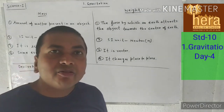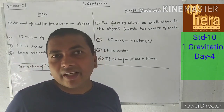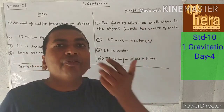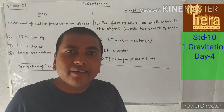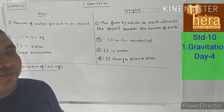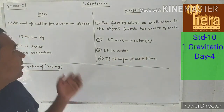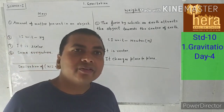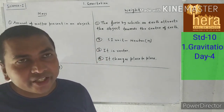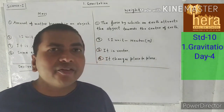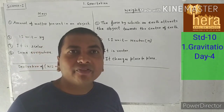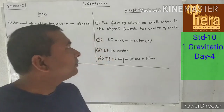The SI unit of mass is kilogram and the SI unit of weight is Newton, because weight is one type of force and the SI unit of force is Newton. Therefore, the SI unit of weight is also Newton. Mass is a scalar quantity — scalar means the physical quantity having only magnitude. Weight is a vector quantity — vector means those physical quantities having magnitude as well as direction.